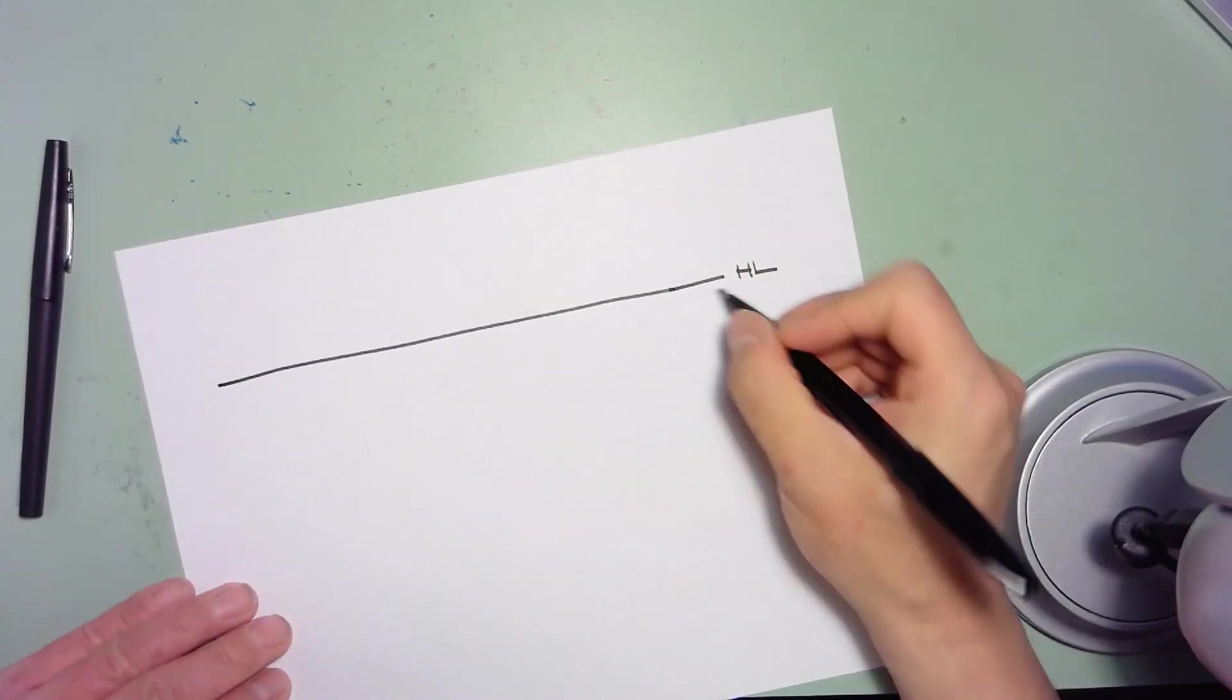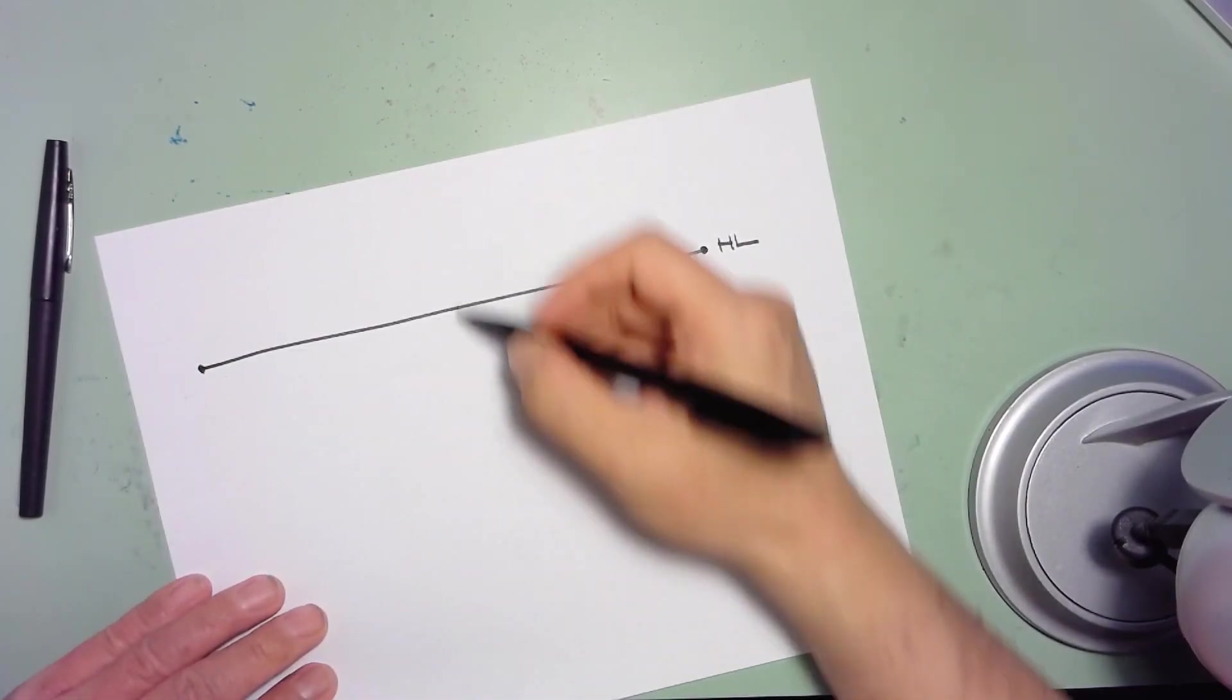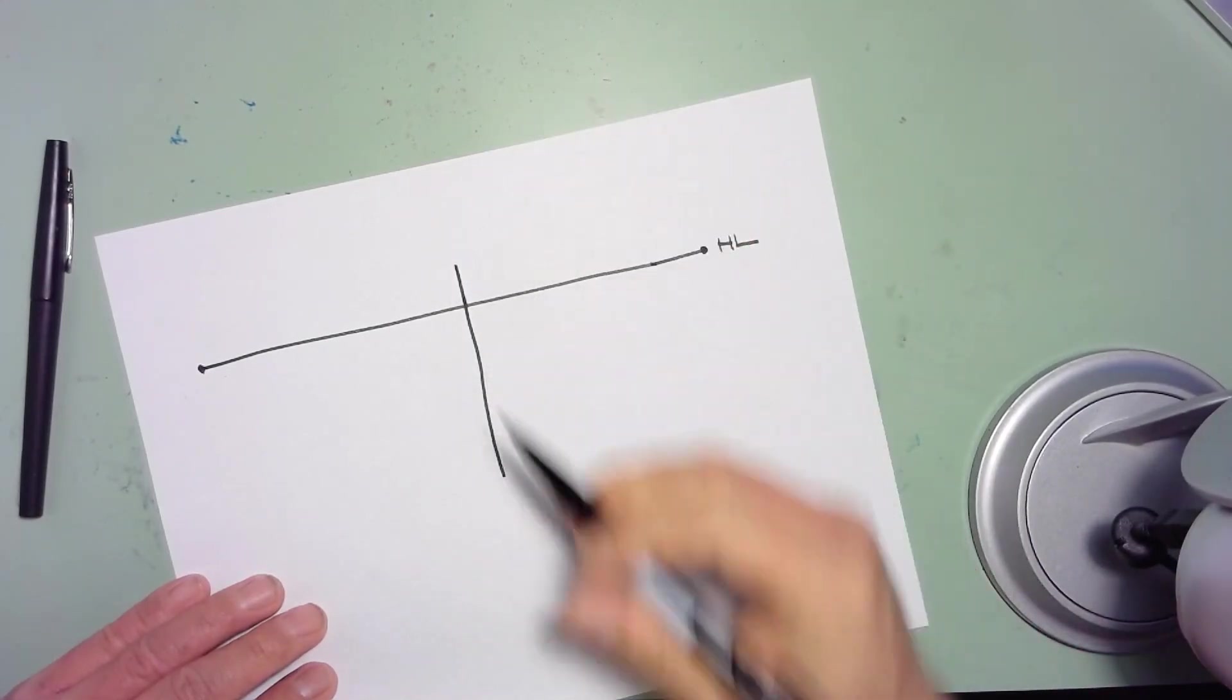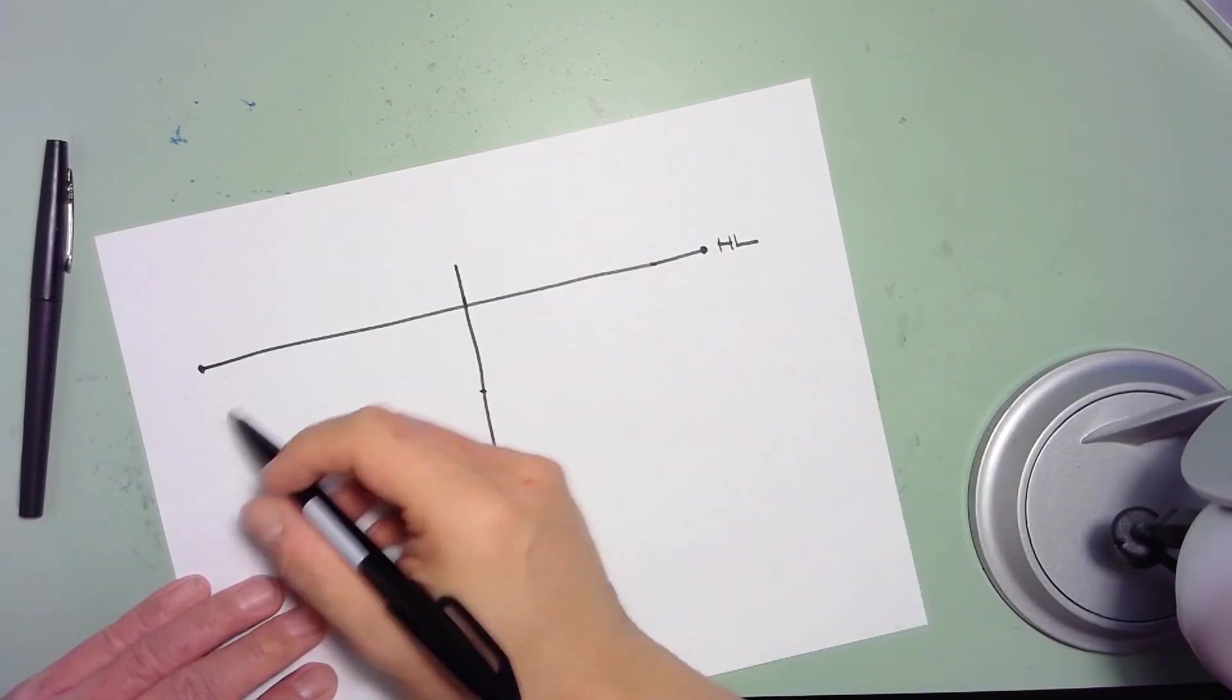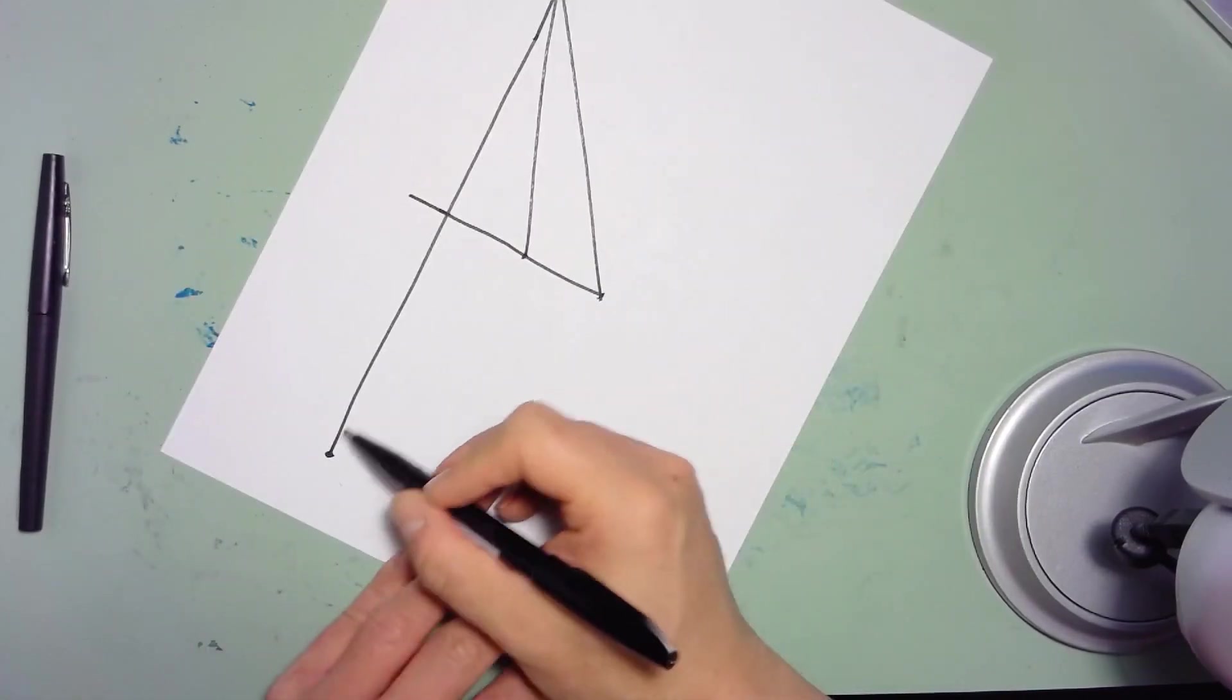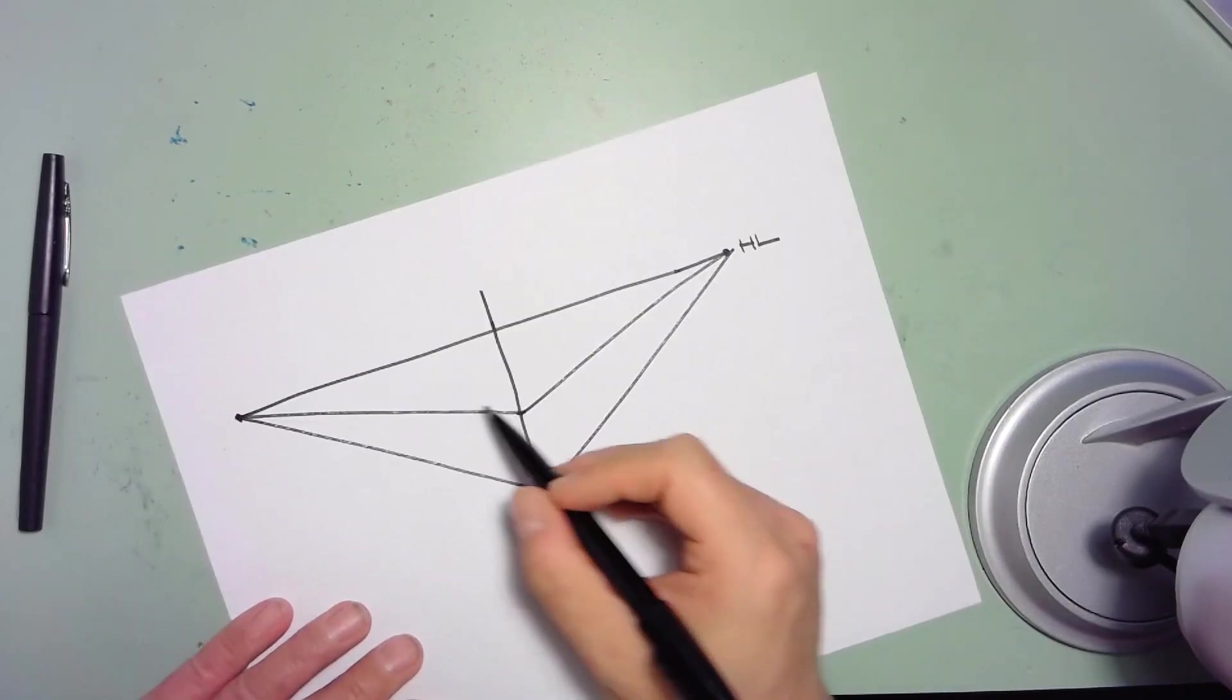So let's talk about laterally moving a cube along a horizon line. Typically with two-point perspective, a lot of students will actually try to draw the cube really dead center with the edge of the cube basically aligned with exactly the center between the two vanishing points. That's fine.